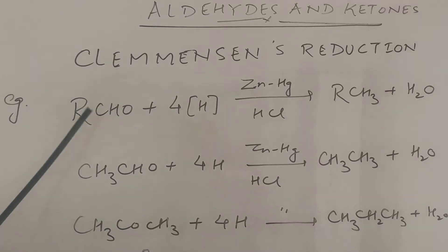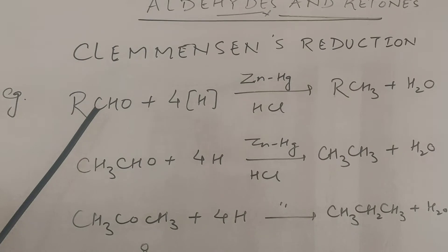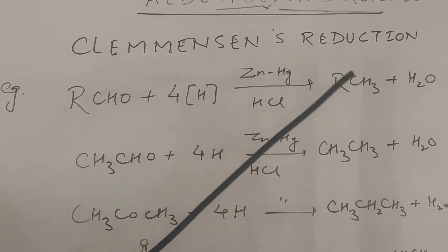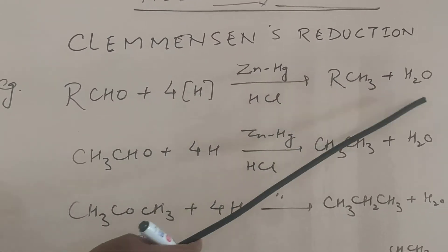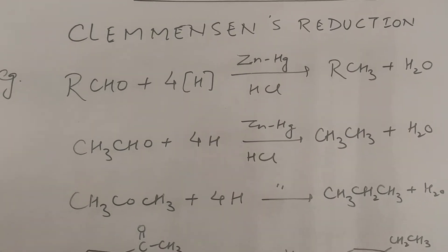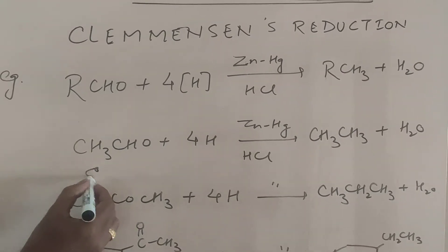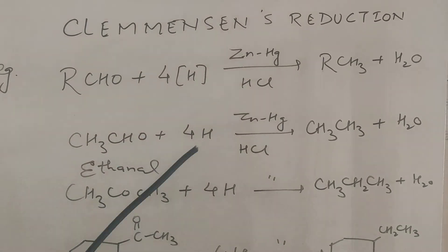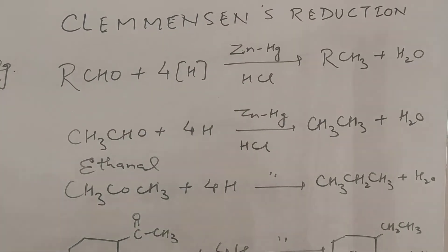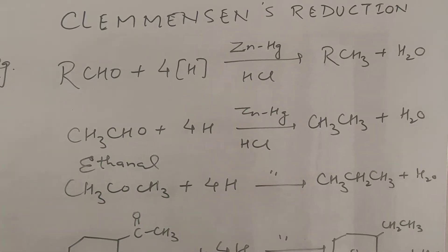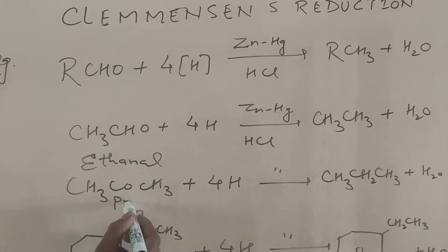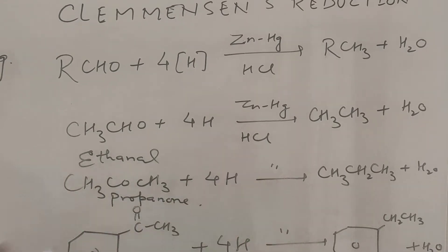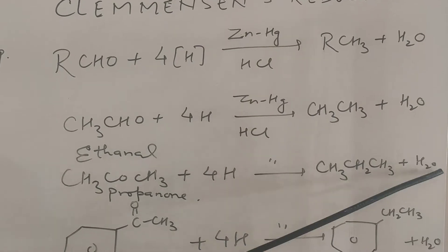Now we will see a few examples of Clemmensen reduction. Aldehyde when treated with zinc amalgam HCl forms RCH3, that is alkane, plus water. For example, with ethanal when reduced in presence of zinc amalgam HCl, we get ethane plus water. With acetone (propanone) treated with zinc amalgam HCl, we get propane plus water.